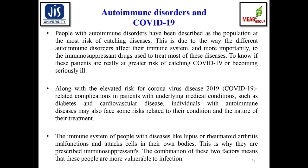People with autoimmune disorders have been described as a population at greater risk of catching COVID-19. This is due to the way autoimmune disorders affect the immune system and to the immunosuppressant drugs used to treat most of these diseases. The immune systems of people with conditions like lupus and rheumatoid arthritis malfunction and attack their own body's cells. The combination of a malfunctioning immune system and immunosuppressant drug use makes these people more vulnerable to COVID-19 infection.